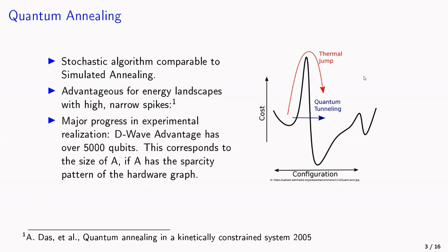There has been major progress in experimental realizations of such systems, so the D-Wave Advantage has already over 5000 qubits. This corresponds to the size of A, if A has the sparsity pattern of the hardware graph. And D-Wave offered some computational time of free access over the cloud, which has already led to hundreds of publications by researchers who try to benchmark these systems.